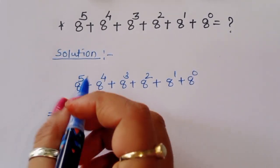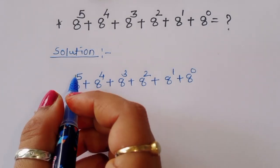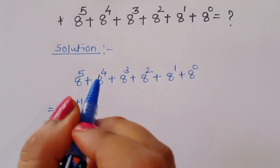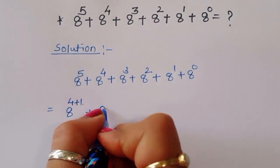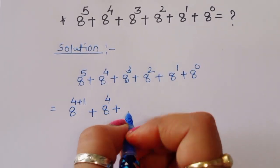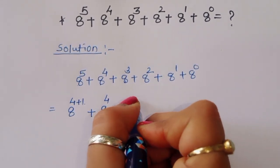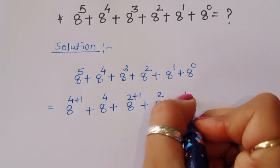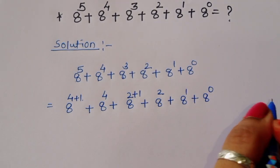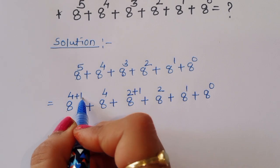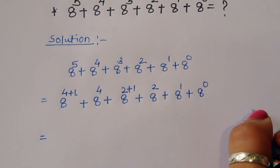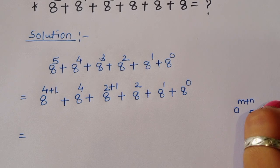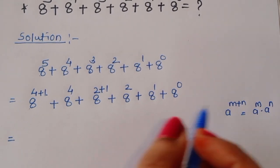So we can write 8 power 5 as 8 power 4 plus 1, and similarly 8 power 3 as 8 power 2 plus 1. Now, using the formula a power m plus n equals a power m times a power n, we will apply this to each term.